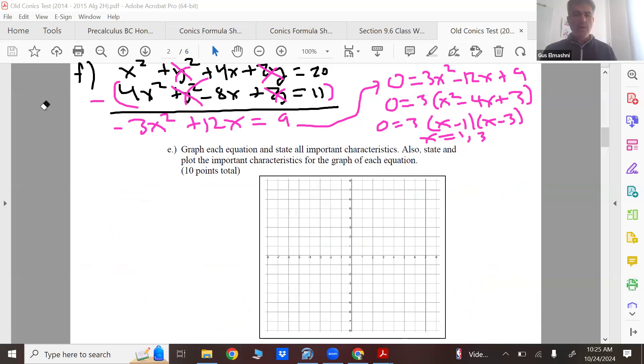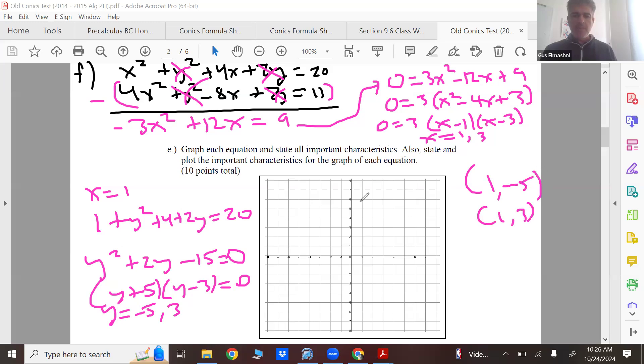When x equals one, you'll have one plus y squared plus four plus two y equals twenty. So you should get one comma negative five which the graph shows, and one comma three.